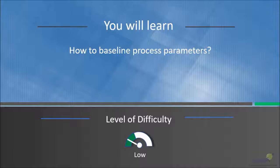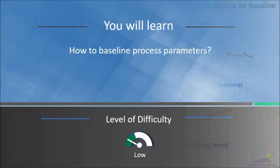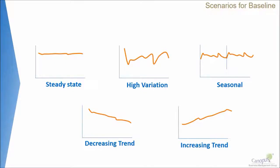In this lecture we will learn how to baseline process parameters. Baselining is the task of establishing the current performance of the process so that it can become a yardstick for defining where we want to be in future. There are five different scenarios for baselining, which have been illustrated here.